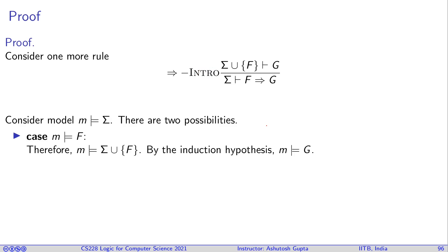That's exactly being stated here. Now the other case: m does not satisfy F. Then it's fairly trivial. If m does not satisfy F, then m clearly satisfies F implies G. Therefore, sigma implies F implies G.